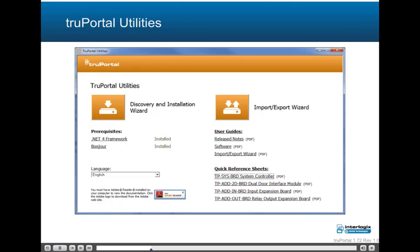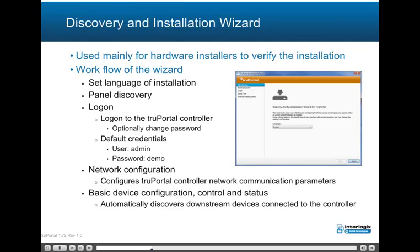Here is the TruePortal Utilities launched from the installation disk. After selecting the appropriate language, the installation is started by clicking the Discovery and Installation Wizard button, which is used mainly for hardware installers to verify the installation. Workflow of the wizard: set language of installation, panel discovery, log on to the TruePortal controller, optionally change password. Default credentials are user: admin, password: demo.